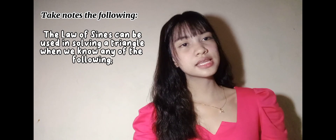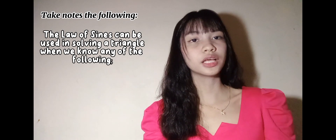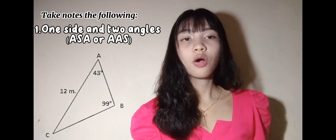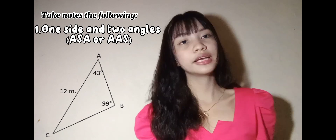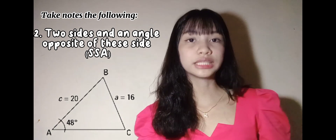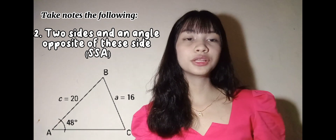The Law of Sines can be used in solving a triangle when we know any of the following. Remember, the Law of Sines is not applied in all cases. We apply it when there are two angles and one side — angle-side-angle or angle-angle-side. Next, when there are two sides and an angle opposite one of those sides, or side-side-angle. This is where we will have the ambiguous case.